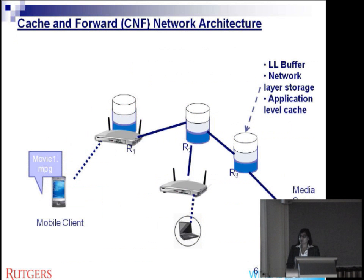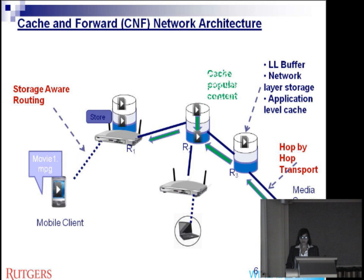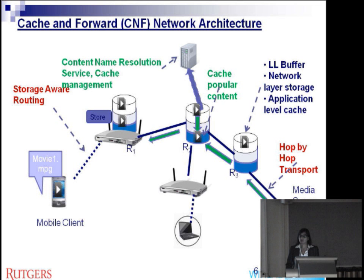So what does this cache and forward architecture look like? It proposes a whole bunch of optimizations for wireless: hub-by-hub transport and storage-aware routing to support mobile users who can get disconnected or have slower connections to the network. For content, we propose in-network caching, content name resolution, and cache management policies.